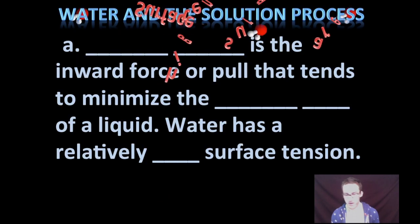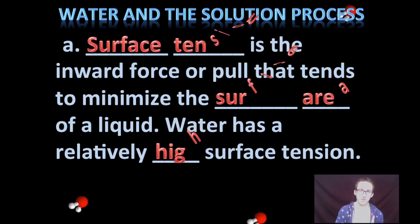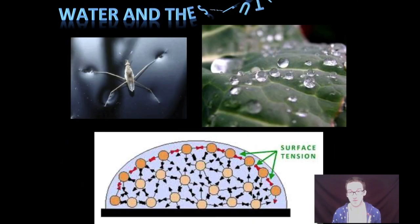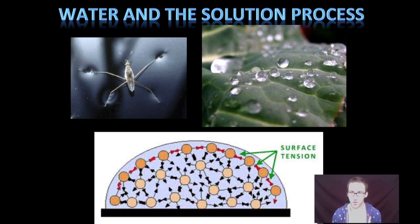The first property that we observe that is related to this unique structure of water is surface tension. It's just the inward force or pull that tends to minimize the surface area of a liquid. Due to the hydrogen bonding that occurs in between water molecules, water is able to do a really good job of pulling other molecules of water in, creating a relatively high surface tension.